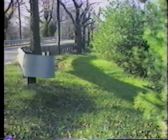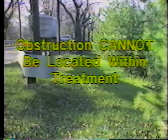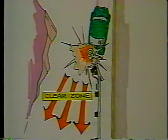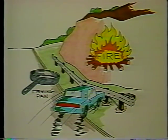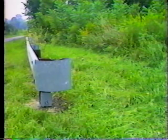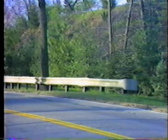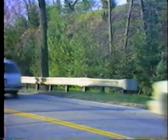Recovery space is a major consideration with a BCT end treatment. Obstructions like utility poles cannot be located within the treatment. The BCT is designed to bend backward when impacted near or at the nose, so there must be an area behind the treatment allowing the impacting vehicle to regain control. No signs or other roadside obstacles should be placed within 200 feet of the BCT, and terrain leading to the barrier should be as flat as possible so that any impacting vehicle hits it at the proper height.